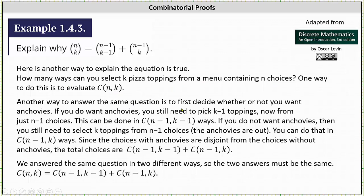Another way to answer the same question is to first decide whether or not you want anchovies. If you do want anchovies, you still need to pick K minus one toppings from now N minus one choices. This can be done in N minus one choose K minus one ways.